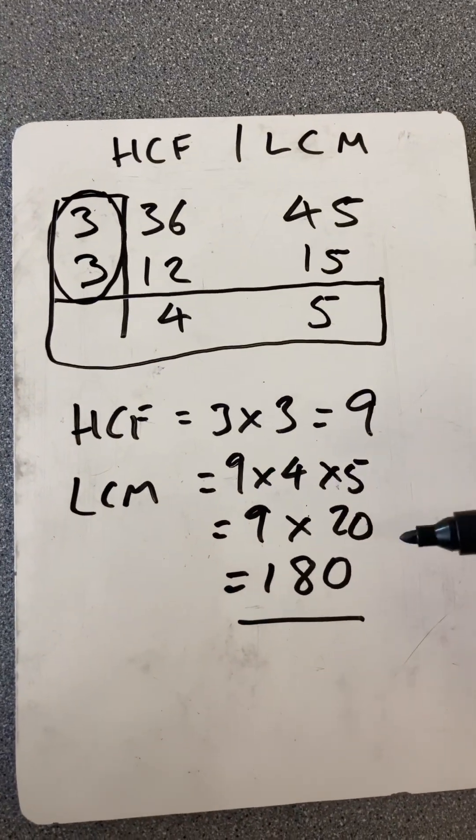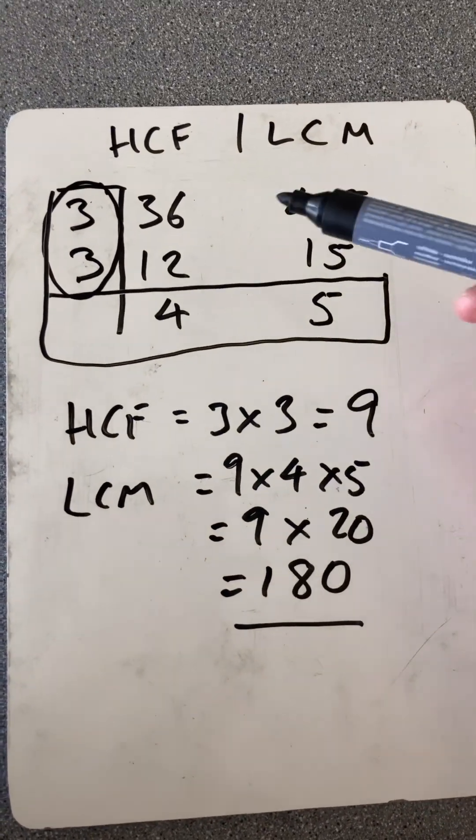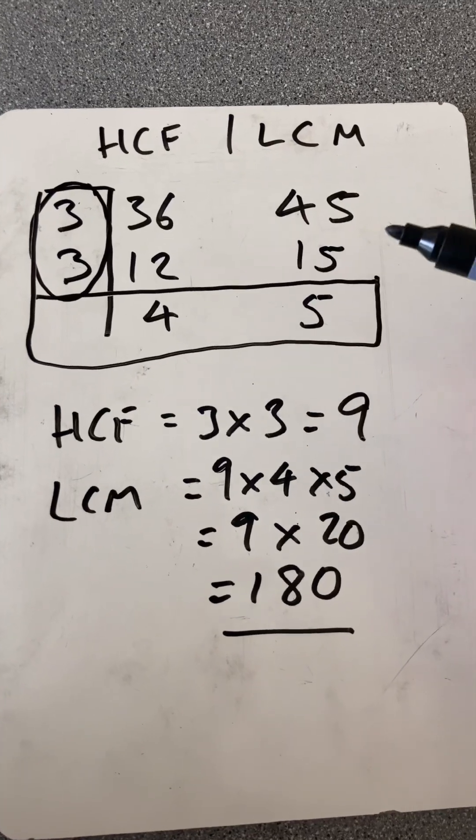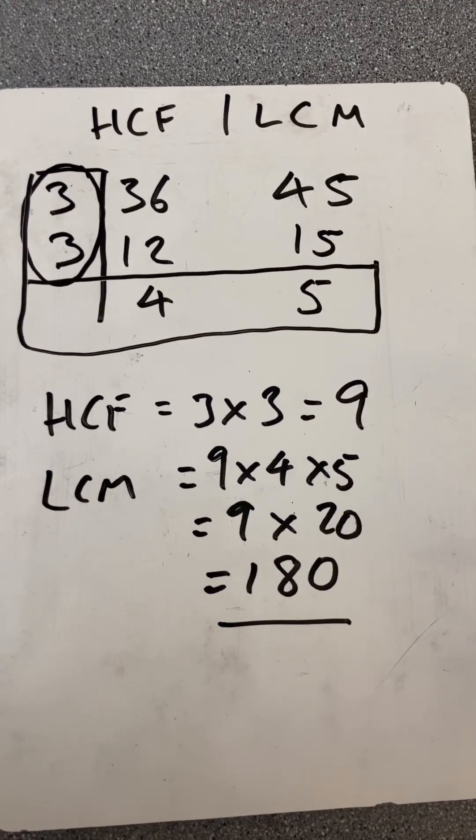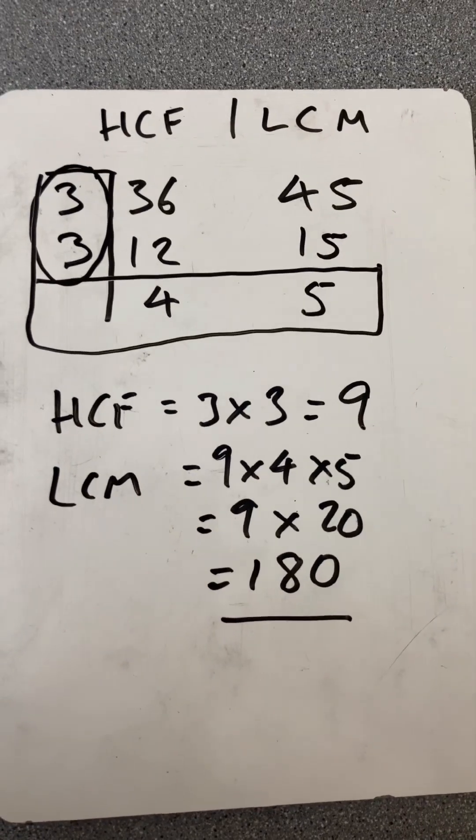So there we go. That's the table method for highest common factor and lowest common multiple of two numbers. And you would see the same if you did Venn diagram or listing or prime factor decomposition. Thanks for watching.